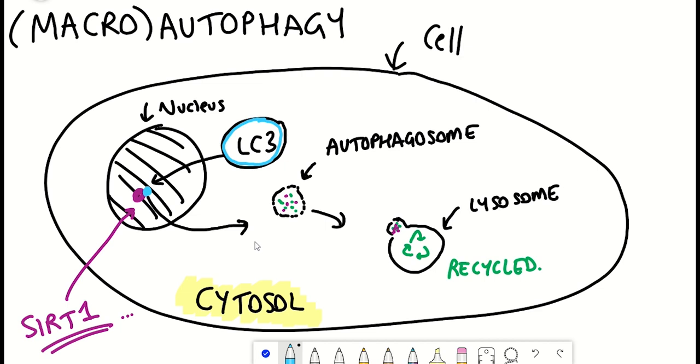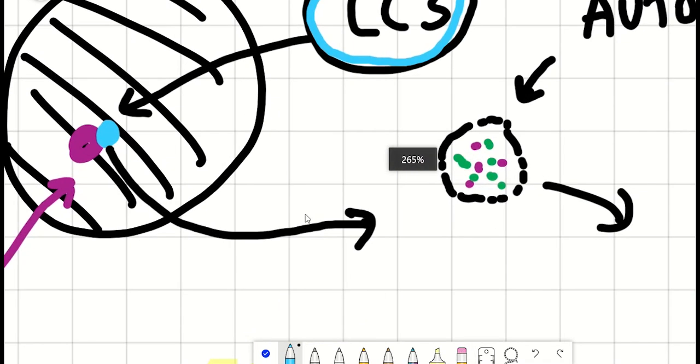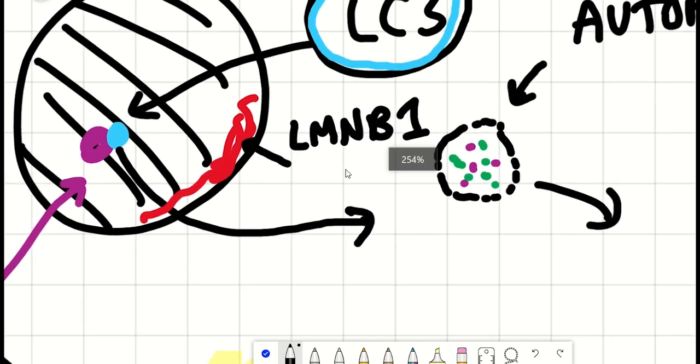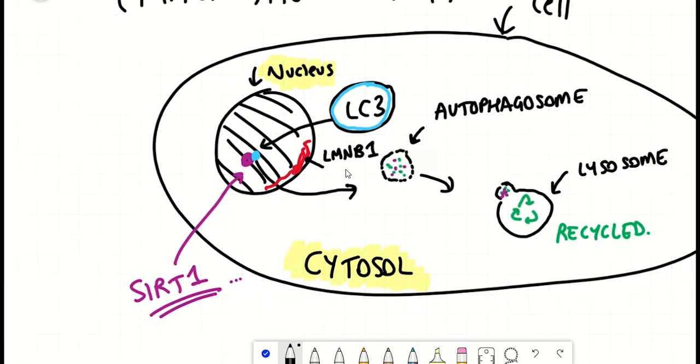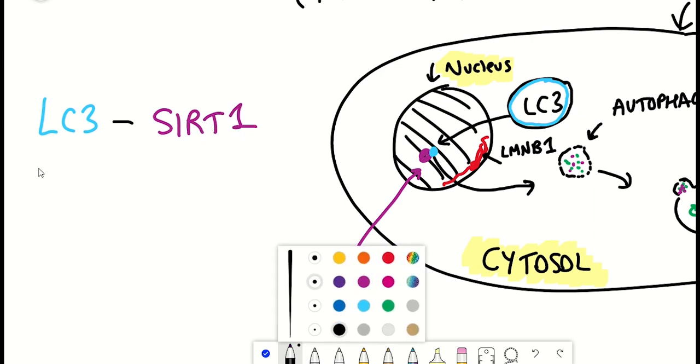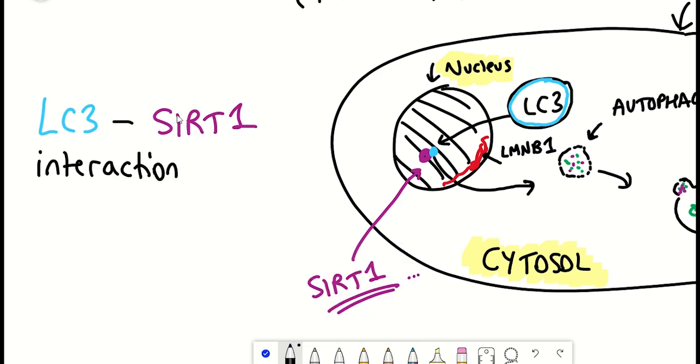This is interesting because autophagy is commonly thought to only be involved in degrading cytoplasmic components. But SIRT1 isn't alone, because this lab had previously shown that another protein that declines during senescence, Lamin B1, is also degraded via an LC3-dependent nuclear lysosomal transport system. Based on their data, it seems that this LC3-dependent autophagy degradation is enhanced during senescence because the interaction between SIRT1 and LC3 increases. But the precise mechanism as to why this happens is not so clear.